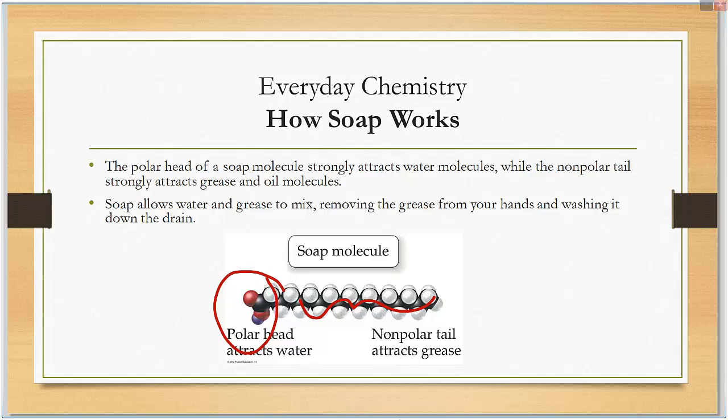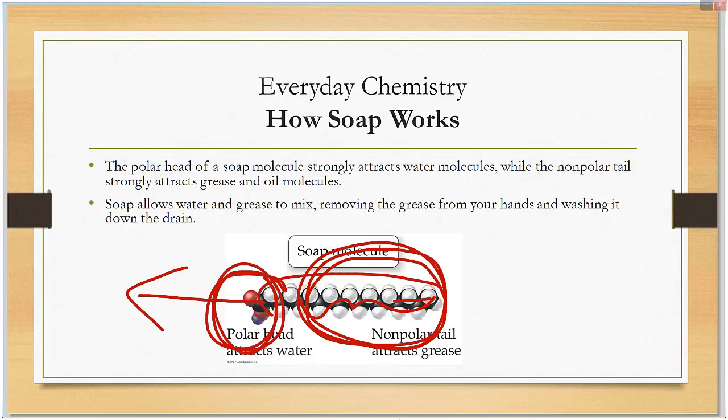As you rub soap on your face or on your hands, the oil is getting mixed in with this nonpolar area. Then when you're ready to rinse off, the polar head attaches to the water, and as the water rushes against your face, it pulls all this nonpolar tail along with the other oils with it and pulls it off your face. And that's how soap works. And that is the basis of electronegativity and polarity.